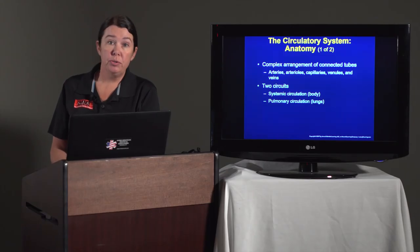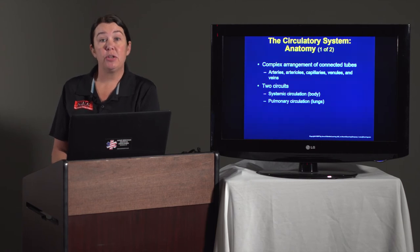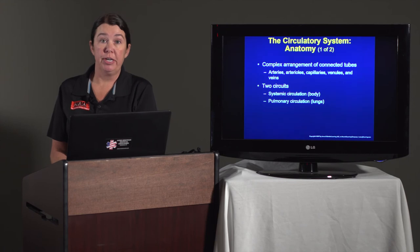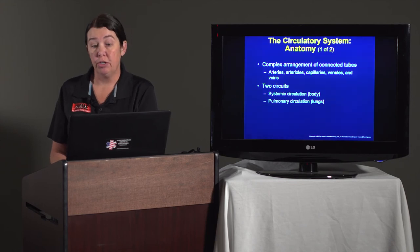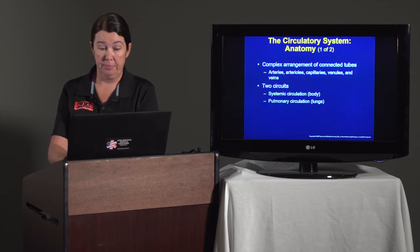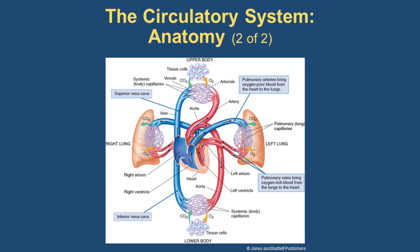The circulatory system is a complex arrangement of connected tubes: arteries, arterioles, capillaries, venules, and veins. We have two circuits in our body: systemic circulation, which moves blood around our body, and pulmonary circulation, which moves blood in and out of our lungs. This slide covers the circulation of blood through the body — it's important to know.